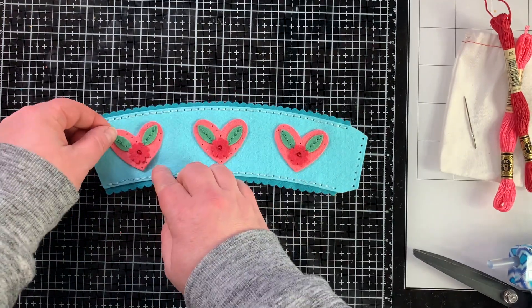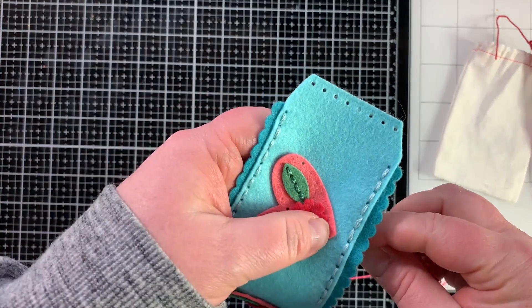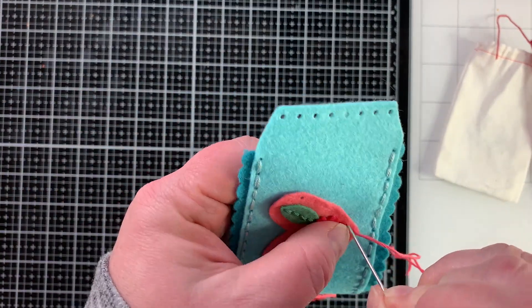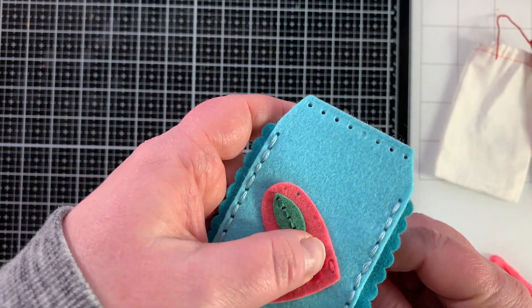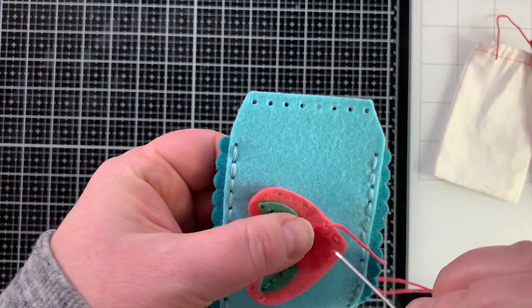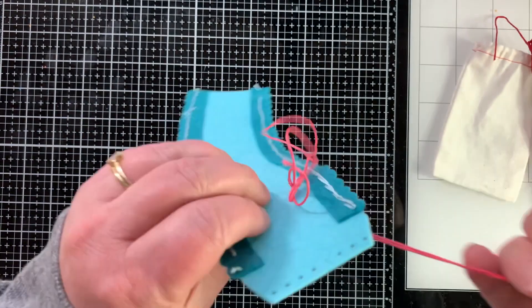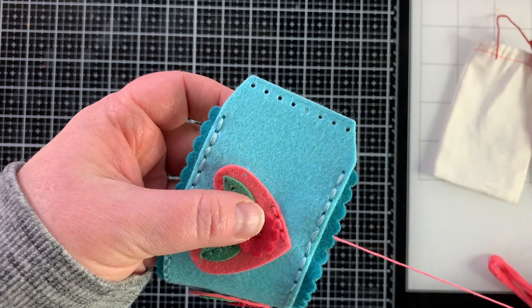I'm going to use the same color thread as my hearts and I will stitch all the way around that to permanently attach it to the cozy using the same stitch that I've used throughout this entire video. I love how this is coming together with that blue background. I think it's really fun to have a Christmas gift that the person can use throughout the year or you could make one that is more Christmassy themed either way.